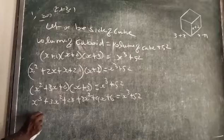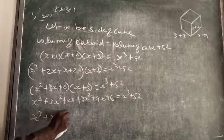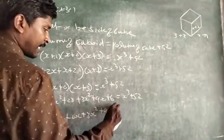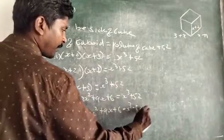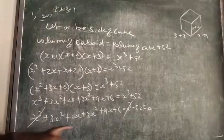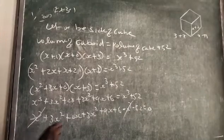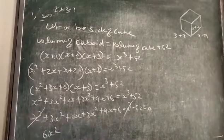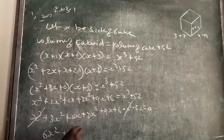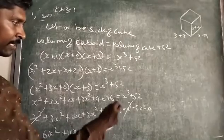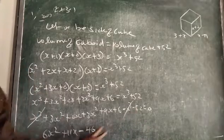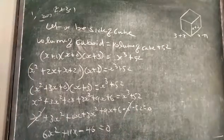Bring everything to one side: x³ + 3x² + 2x + 3x² + 9x + 6 minus x³ minus 52 equals 0. The x³ terms cancel. Three x² plus 3x² becomes 6x². Two x plus 9x becomes 11x. And 6 minus 52 becomes minus 46.